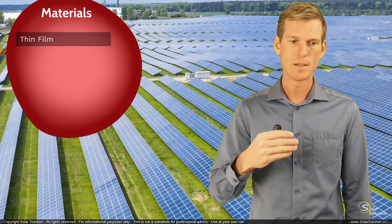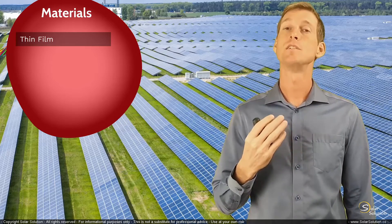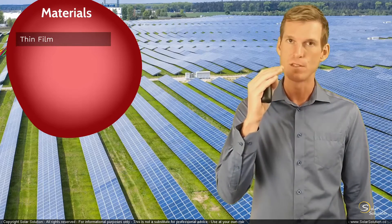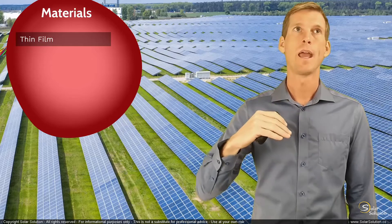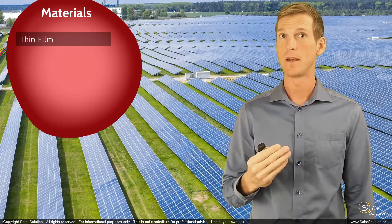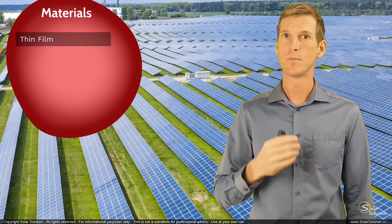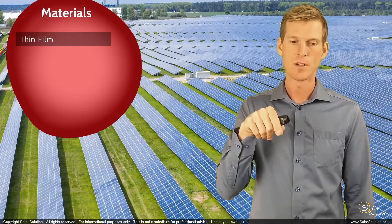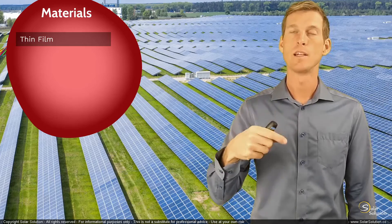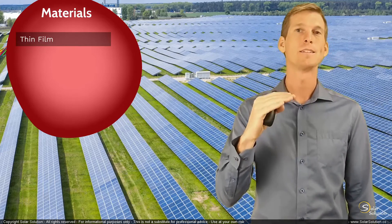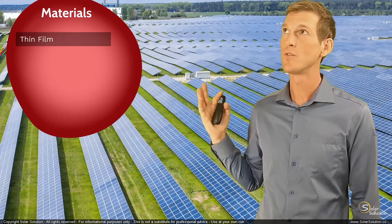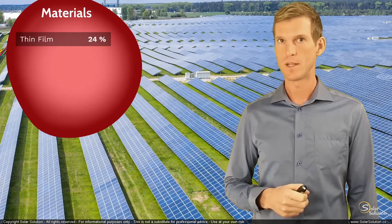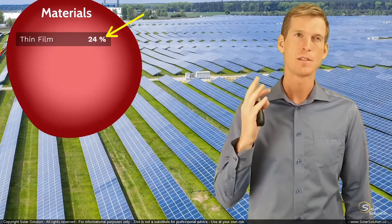When looking at different material options for solar cells and panels, it's valuable to know the efficiencies you can expect. For now, just remember that efficiency lies between zero and one hundred percent, and the higher the better. For thin film material, the maximum overall efficiency you can expect from a solar cell is currently 24 percent.